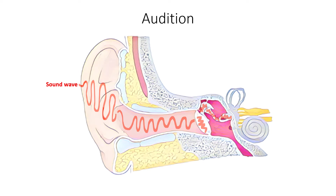From stapes, sound vibrations are picked up by the oval window and moved to the cochlea, where sound vibrations are converted into a neural signal, which then travels along the cochlear nerve, also known as the auditory nerve, to the brain for interpretation.